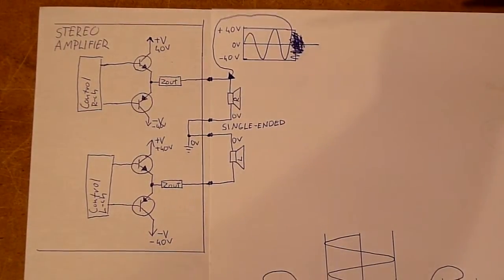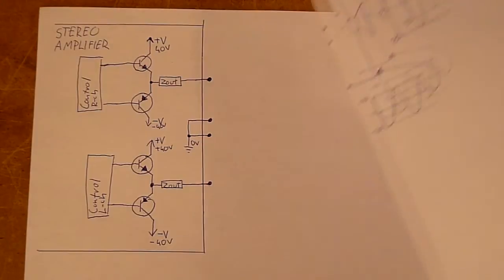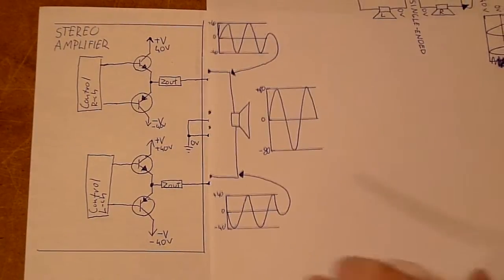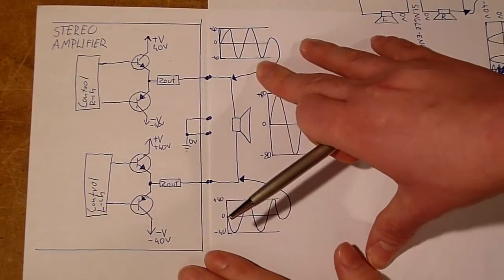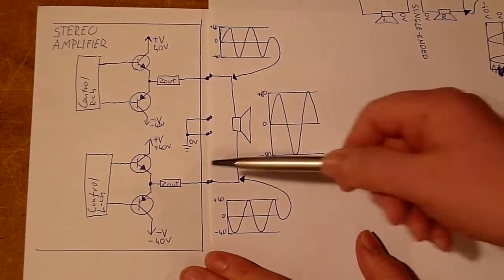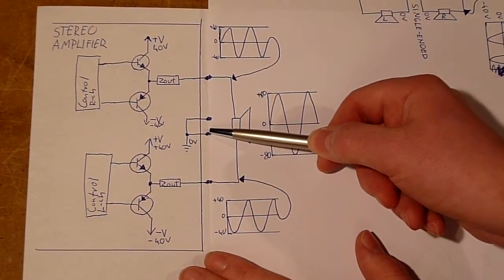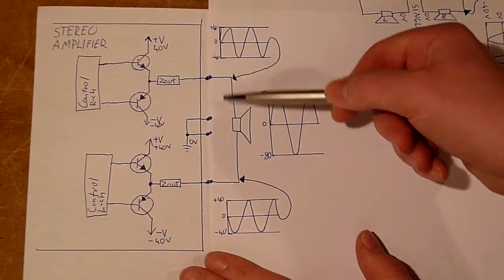So when we hook up in bridge-tied mode, load mode, we essentially do this. Rather than connecting one speaker between each amplifier and ground, we hook up one speaker between each amplifier.